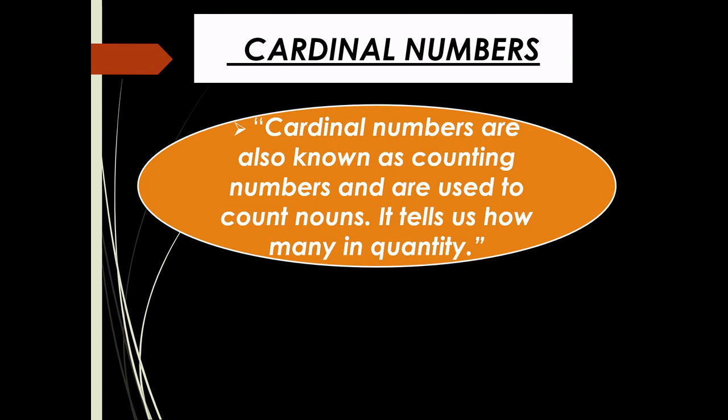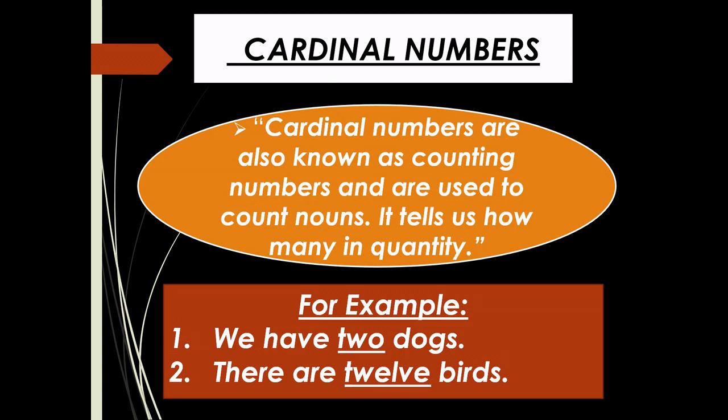Cardinal numbers are used with both singular and plural nouns. For example, 'we have two dogs' — here 'dog' is a noun and '2' is a cardinal number showing the quantity of the noun. Another example: 'there are 12 birds' — here 'birds' is the noun and '12' is the cardinal number showing quantity.